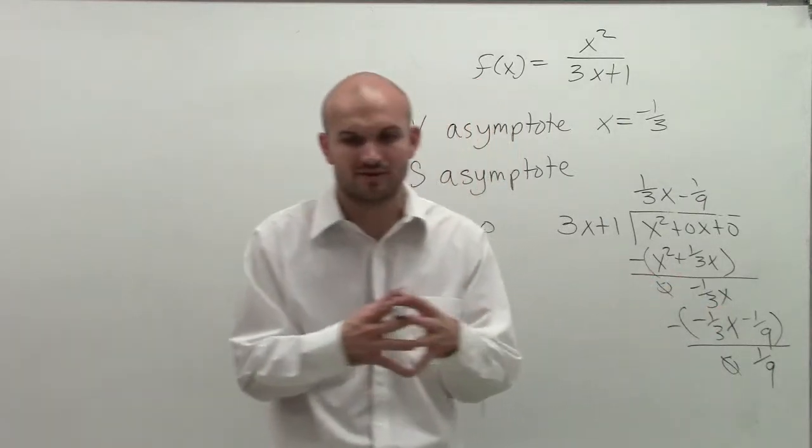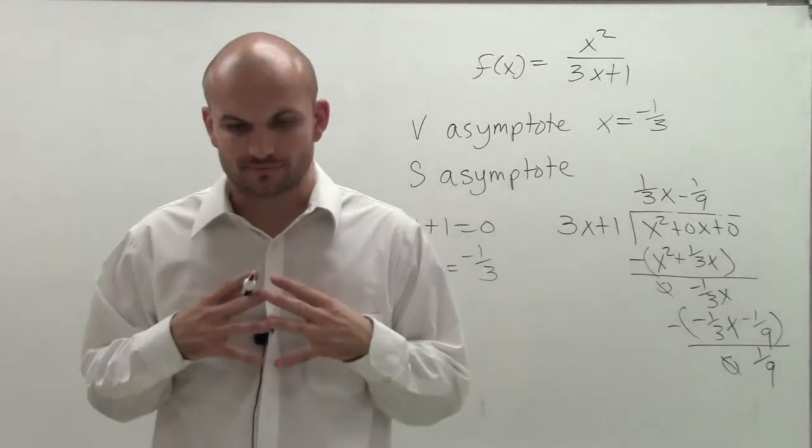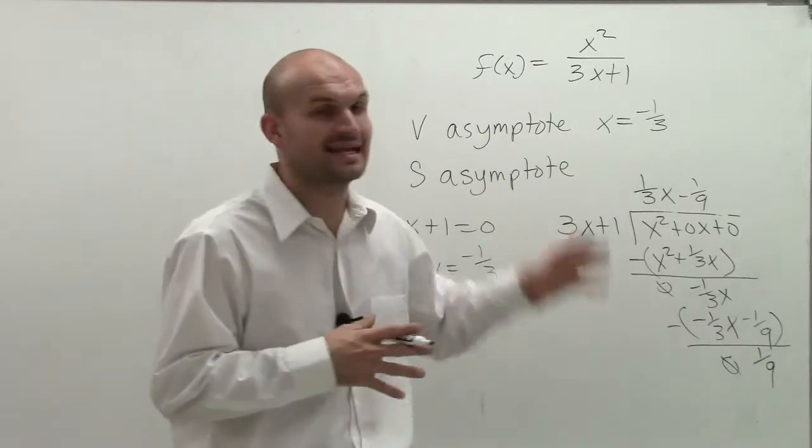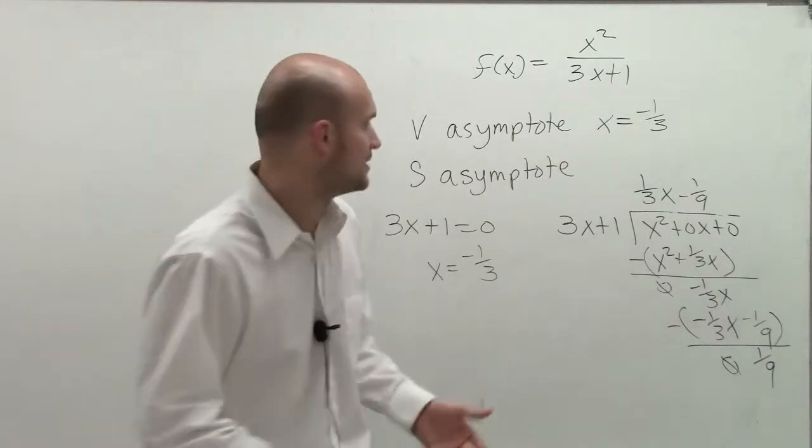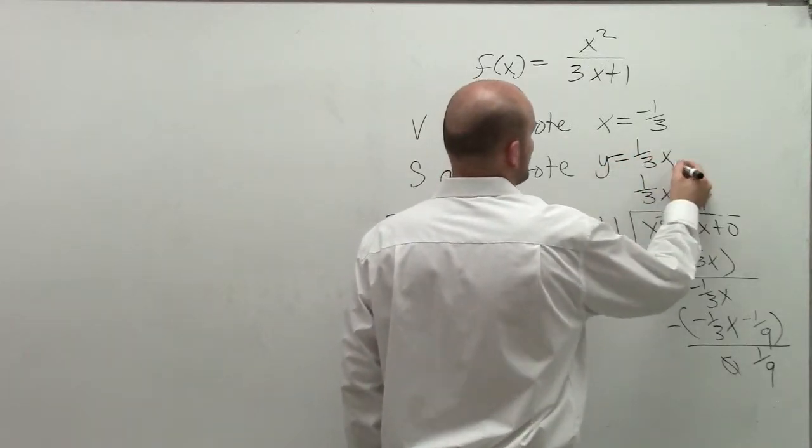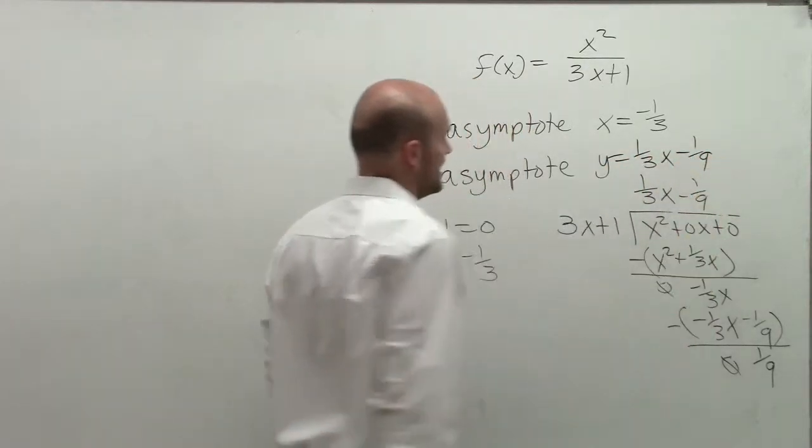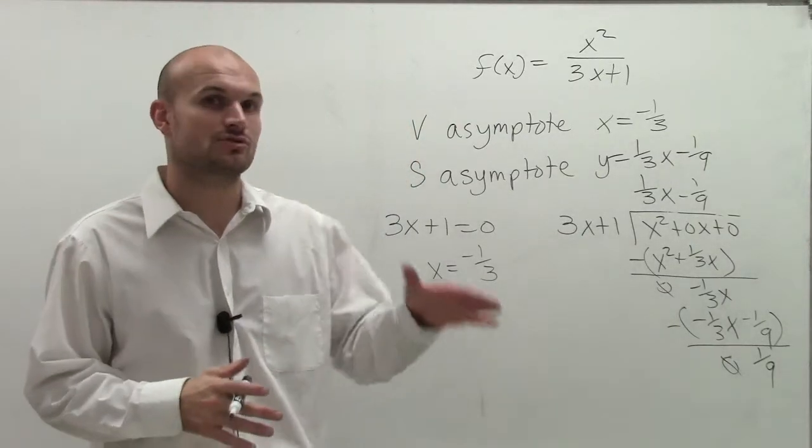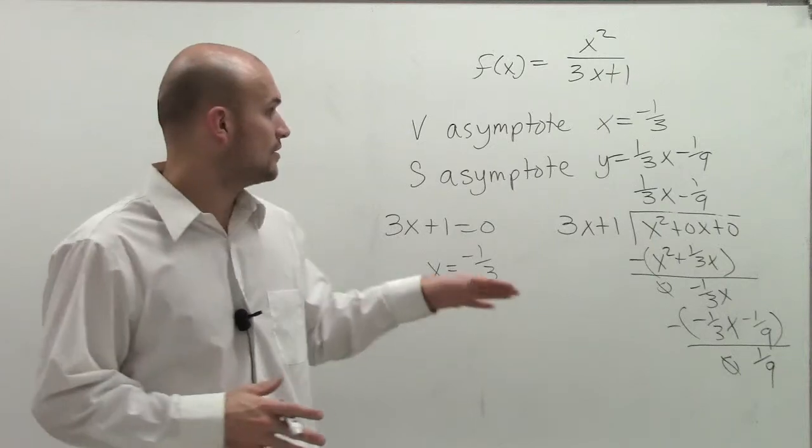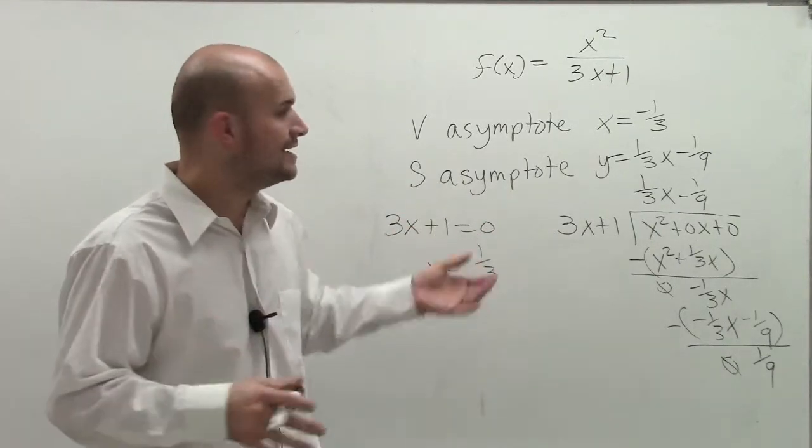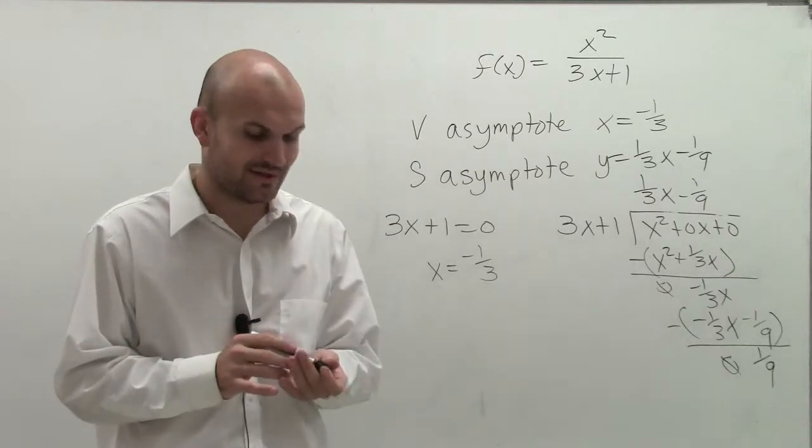But remember, when solving for your slant asymptote, we don't really care about the remainder. So my slant asymptote is y equals 1/3 x minus 1/9. That's the slant asymptote we're going to use. We're going to graph that line, and that's the asymptote that our function is going to approach. So there you go, ladies and gentlemen. I hope you enjoyed.